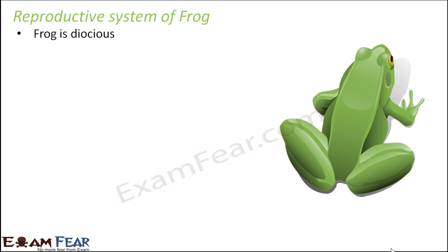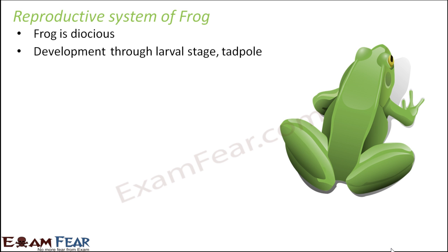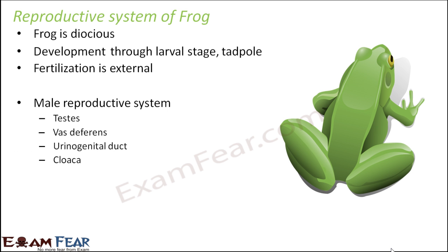Development in frogs is not direct — it happens through a larval stage called tadpole. First it forms a tadpole, and then over a due course of time it forms a frog, so it is indirect development. Fertilization is external, meaning the fusion of the egg and the sperm happens outside the body of the female. The male reproductive system consists of: testes, vas deferens, urinogenital duct, and the cloaca.